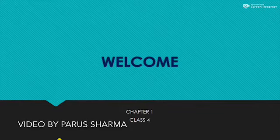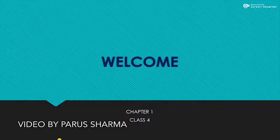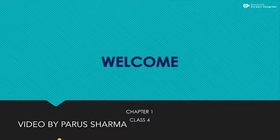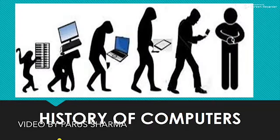Hello everyone, today welcome you all in Chapter 1 of Class 4, that is History of Computers. Today we will learn how computers came into this world. First I will tell you the concept of counting, then we'll start with the history of computers. Computer is an electronic machine that touches every aspect of our life — it can make work easy, fast and comfortable. The word computer comes from the word 'compute', that means to calculate.